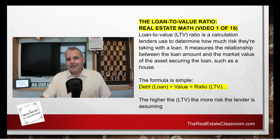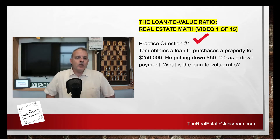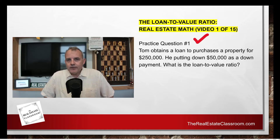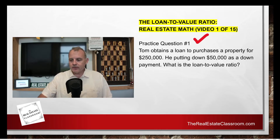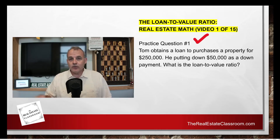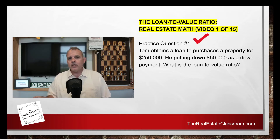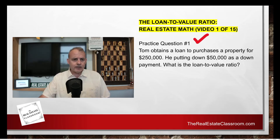Let's take a look at a couple of example problems you may see on your exam. Number one: Tom obtains a loan to purchase a property for $250,000. He is putting down $50,000 as a down payment. What is the loan to value ratio? This question gives us a couple of key numbers — the value or the purchase price is $250,000, and Tom is putting $50,000 down.